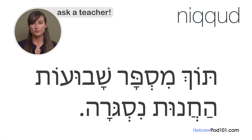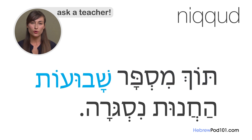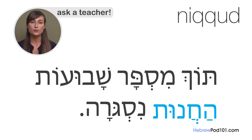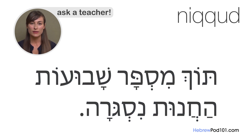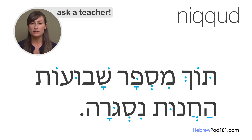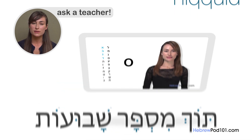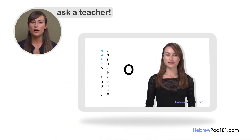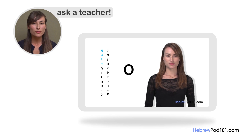Here's an example. Do you see these dots and marks? They represent the vowel sounds and are called nikud. We go over this system in more detail in our Hebrew Alphabet Made Easy series. But for now, take comfort that there is help.